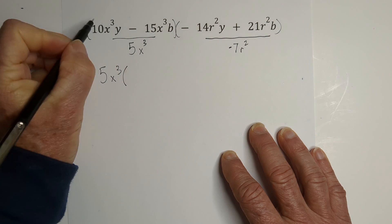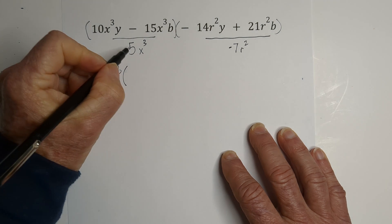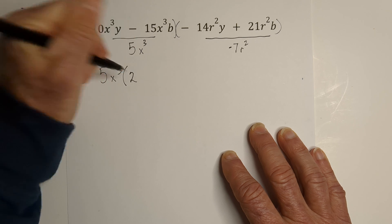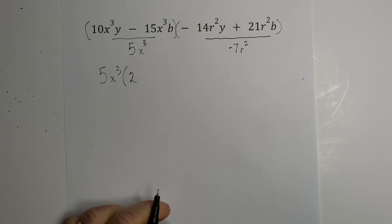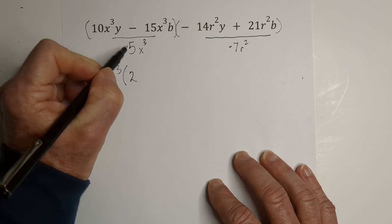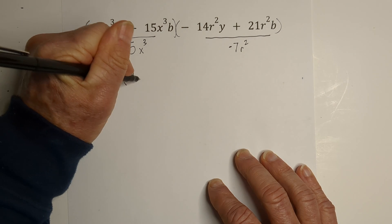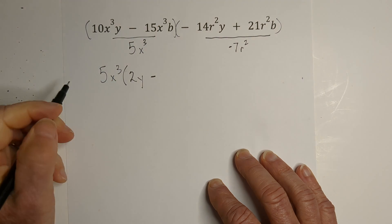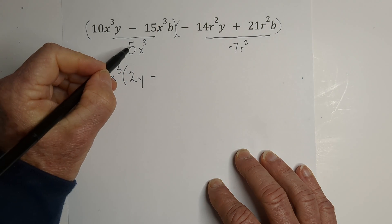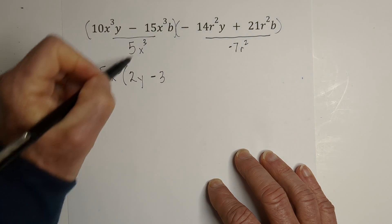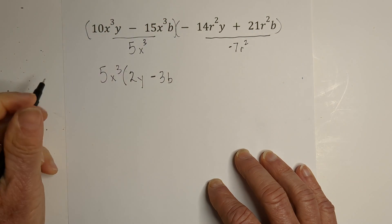And then we're going to divide through. So 5 goes into 10 2 times. And then the X cubes become, they cancel out, become 1. And then we have Y. And then we have a negative. 5 goes into 15 3 times. X's cancel. And we're left with a B.